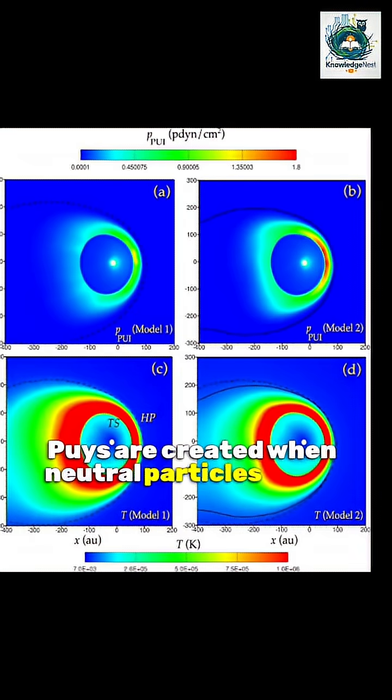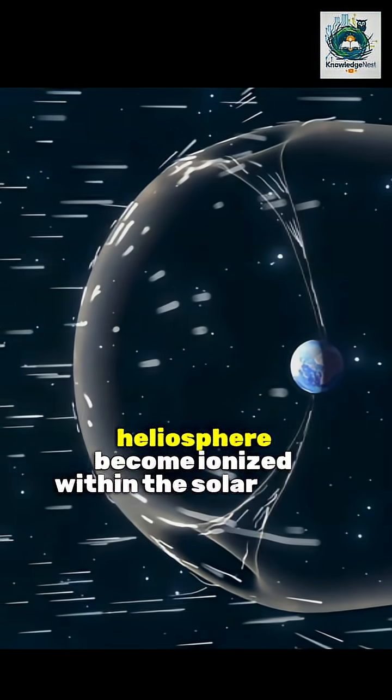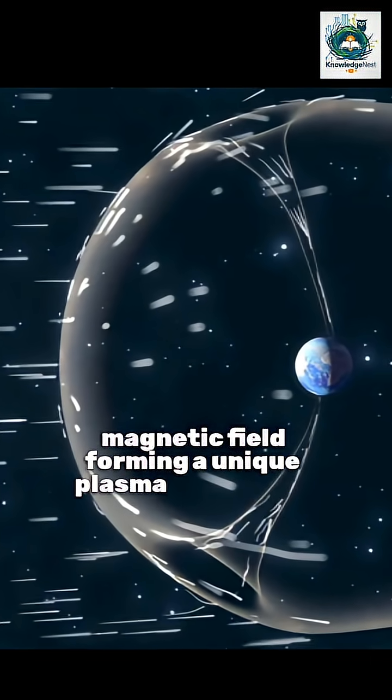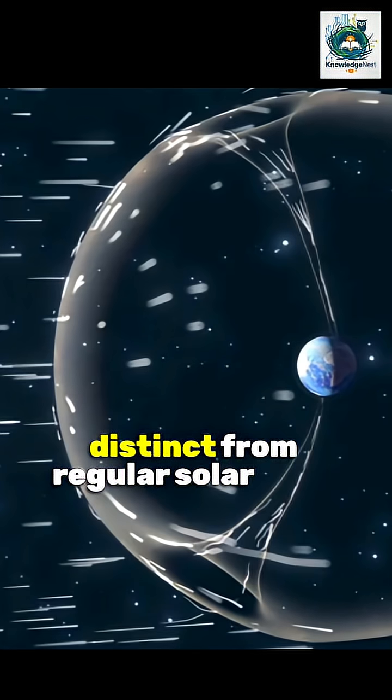PUIs are created when neutral particles in the heliosphere become ionized within the solar wind. These ions are then carried along and move around the local magnetic field, forming a unique plasma population distinct from regular solar wind.